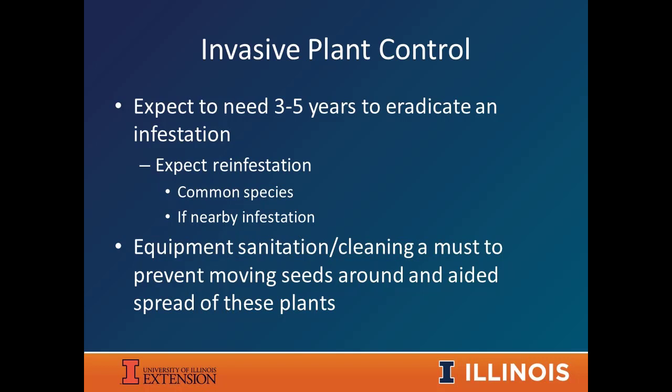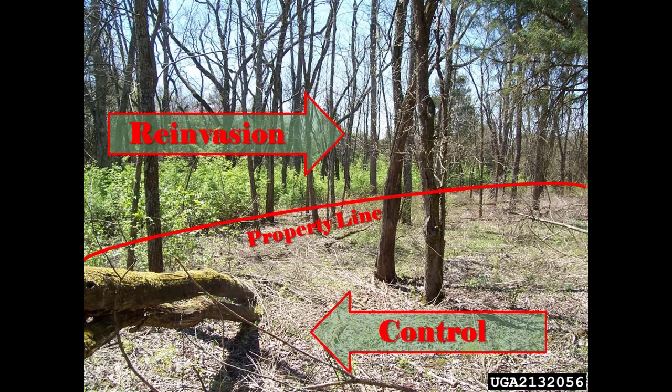For any infestation you control, don't do anything just once. If you spend money controlling it and walk away, these plants will come back with a vengeance. Expect three to five years of work before you can really get something under control — there will always be plants you miss or that didn't die from treatment. About 85% of the cost is that first year, but you still need those second, third, and fourth years. Also keep your equipment clean — mower decks, boots — so you're not spreading invasives while trying to control them.